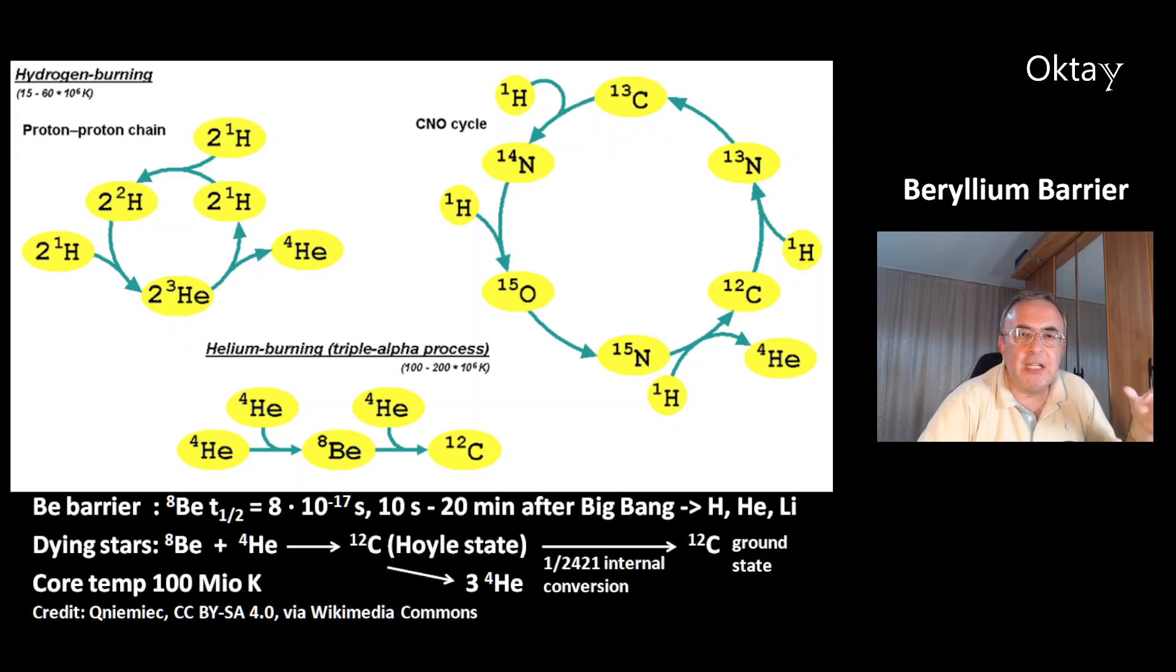So, after the big bang, there was a time period of just 20 minutes to make for the nucleosynthesis of the elements. The beryllium barrier prevented the nucleosynthesis of all the heavier elements than lithium. That's why after the big bang, there were just hydrogen, helium and lithium and no other elements.